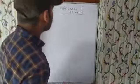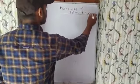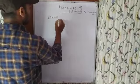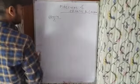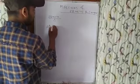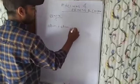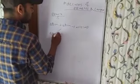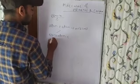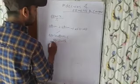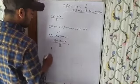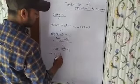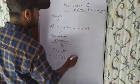Today we will discuss molecules of elements and molecules of compounds. Molecules of elements means atoms combine to form a molecule. It may be a monoatomic molecule. Monoatomic molecule means only one atom is present — these are noble gases. Noble gases show monoatomic molecules.